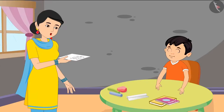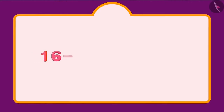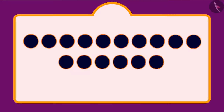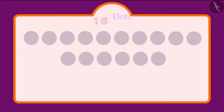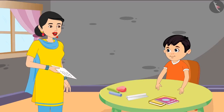Come on then, do these questions and practice for tomorrow's test. Mommy, I have done all the questions! Hey Chotu, all your answers are correct except for one. Which question, mom? If you subtract zero from 16, what will you get? See, there are 16 dots. Now out of these we have to subtract zero dots. What does zero mean? Not even one. So when we did not subtract even one of the 16 dots, how many dots are left? 16 dots, mommy!